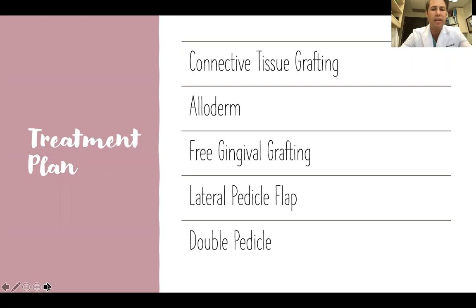Another alternative is alloderm or an acellular dermal matrix. A third option would be free gingival grafting with the intention of gingival augmentation with possible root coverage. A lateral pedicle flap — an older procedure first described in the 1950s by Dr. Grupe out of what was then Oregon University Dental School — and also a double pedicle flap are all different options to consider based on the patient's health history and clinical presentation.